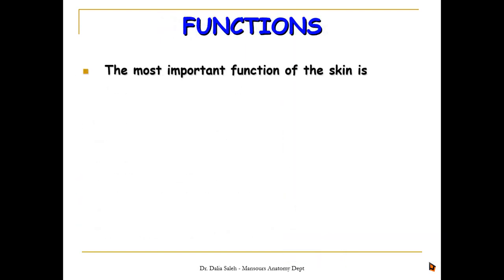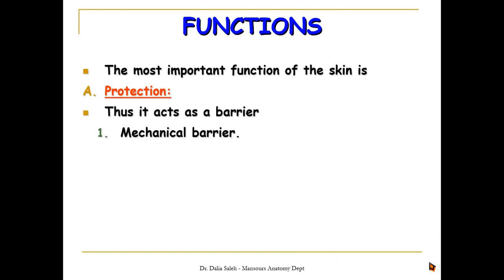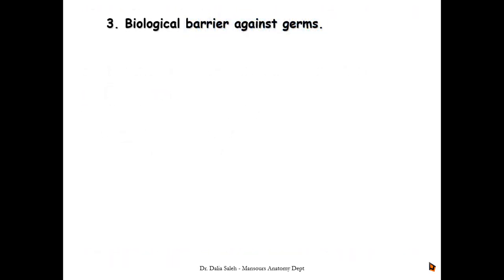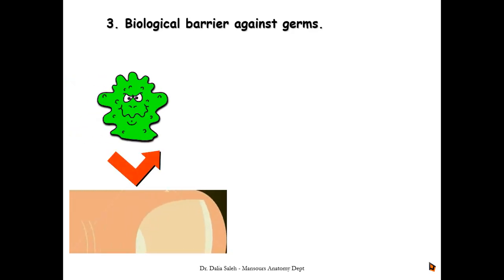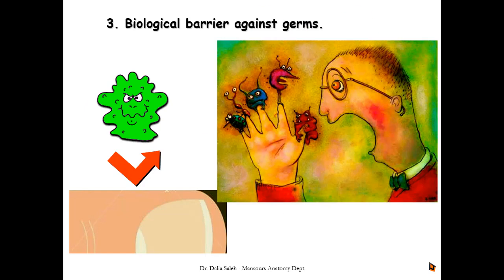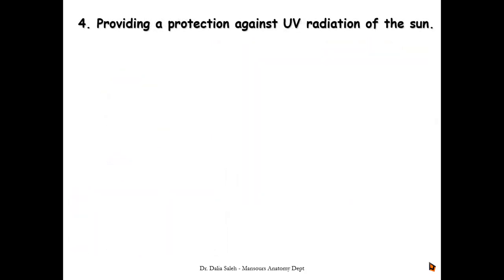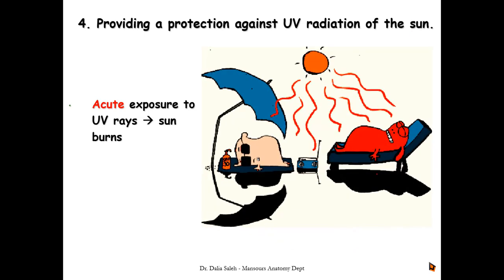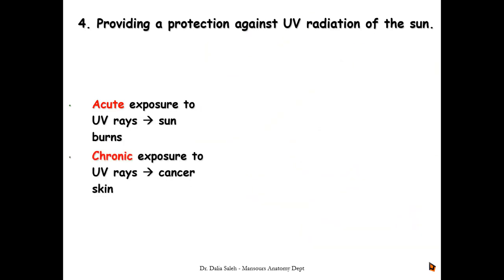The most important function of the skin is protection. The skin acts as a barrier — either a mechanical barrier, a chemical barrier, or a biological barrier against germs. Intact skin prevents bacteria or germs from invading the body, while cracks or ulcers in the skin allow germs to invade. The skin also provides protection against harmful ultraviolet radiation of the sun. Acute exposure to ultraviolet rays leads to sunburn, while chronic exposure may lead to skin cancer, which is more common in fair-skinned people than in dark-skinned people.